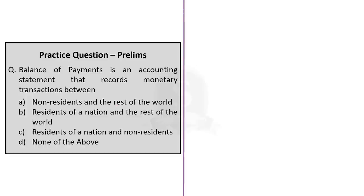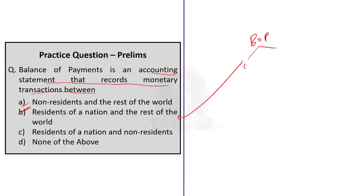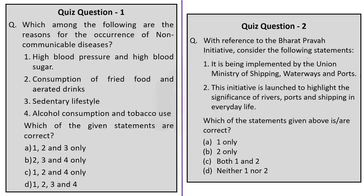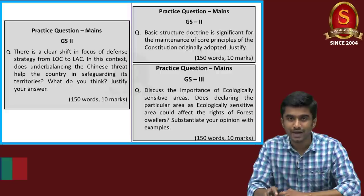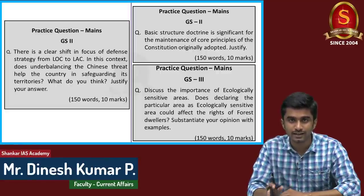Moving on to the third question about balance of payments: balance of payment is an accounting statement that records monetary transactions between — option A: non-residents and the rest of the world; option B: residents of a nation and the rest of the world; option C: residents of a nation and non-residents; option D: none of the above. The correct answer is option B — residents of a nation and the rest of the world. Balance of payment has two components: current account and capital account, both directly related to transactions between residents of a particular nation and the people of the rest of the world. The quiz questions for you all are displayed here — interested aspirants can solve these questions and post the correct answer in the comment section. The mains practice question is also displayed — interested aspirants can write the answer and post it in the comment section. If you liked our video, please hit the like button, comment and share it with your friends. Thank you for listening.